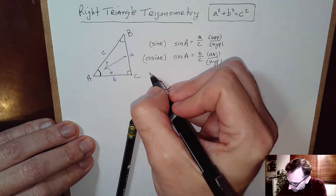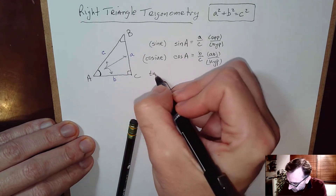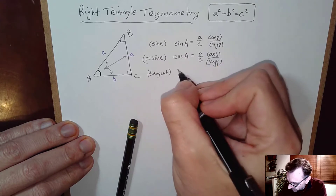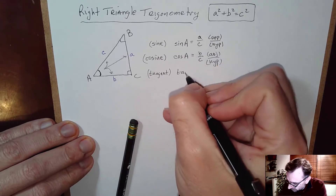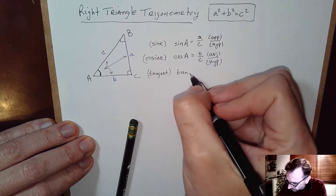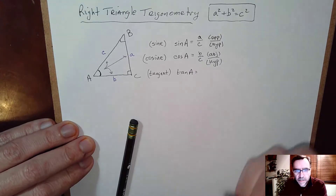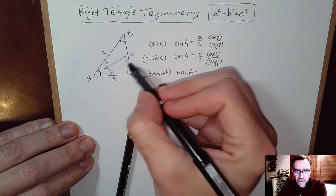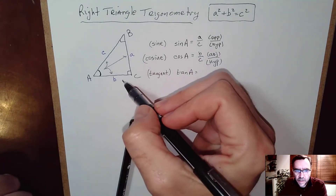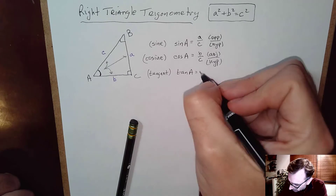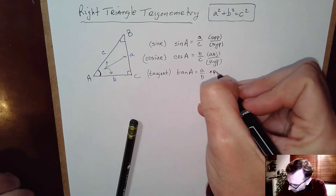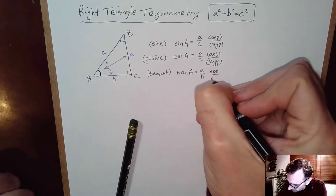The third one is tangent, abbreviated T-A-N. Tangent of A is the ratio of the side opposite to the adjacent, so in this case A over B — opposite over adjacent.